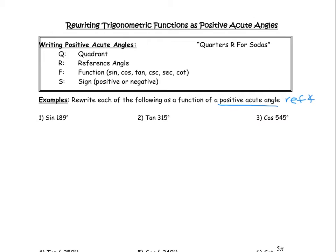We also need to know the signs, so let's put up a chart for ASTC. This tells me positivity — where each function is positive: all functions are positive in quadrant one, sine is positive in quadrant two, tangent in quadrant three, cosine in quadrant four — as well as their respective reciprocals.